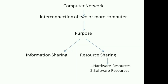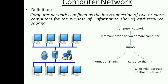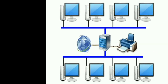There are two types of resources: the first is hardware resources and the second is software resources. Hardware resources means physical devices attached in the network, and software resources means different types of software shared with other users in the network. Here is the diagram of a computer network, which contains a set of nodes connected by communication links.